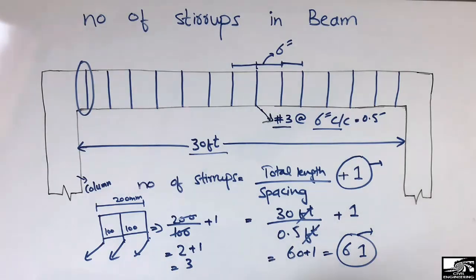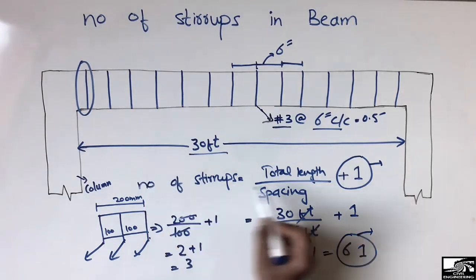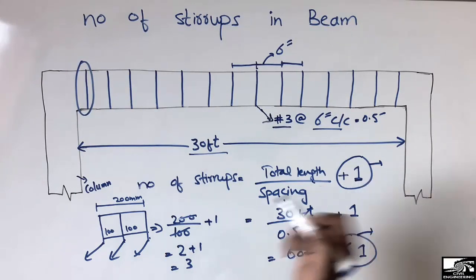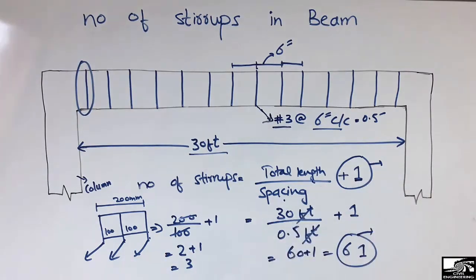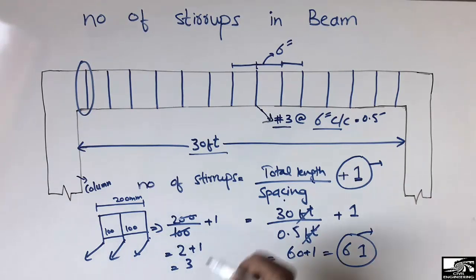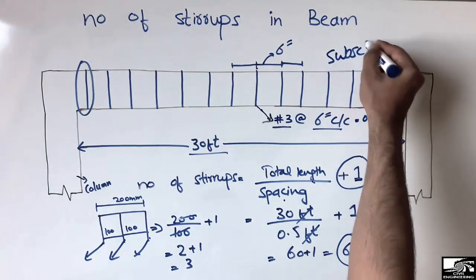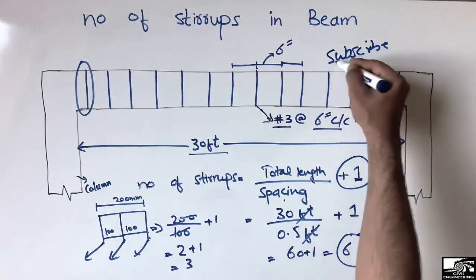I hope you guys understand how to calculate the number of stirrups. The main thing to remember is this formula: total length divided by spacing, plus one — and you can easily calculate the number of stirrups in any kind of beam. Thank you for watching and don't forget to subscribe my channel for daily civil engineering videos.